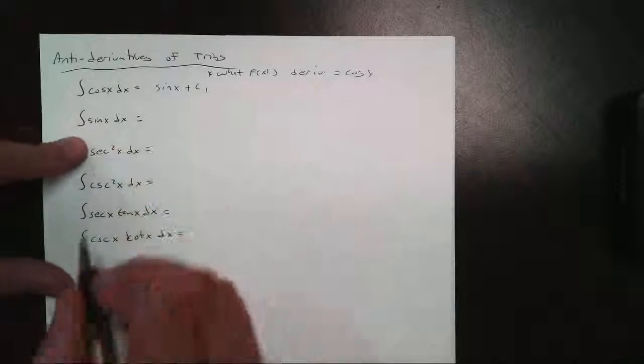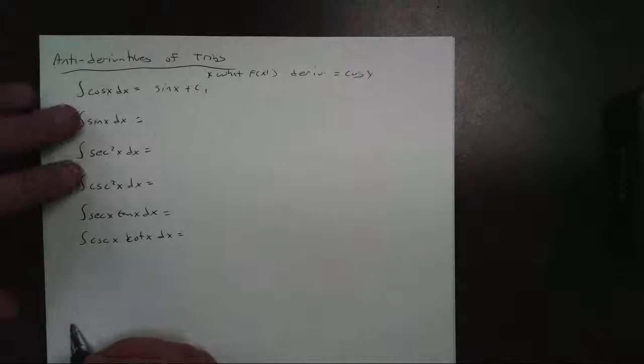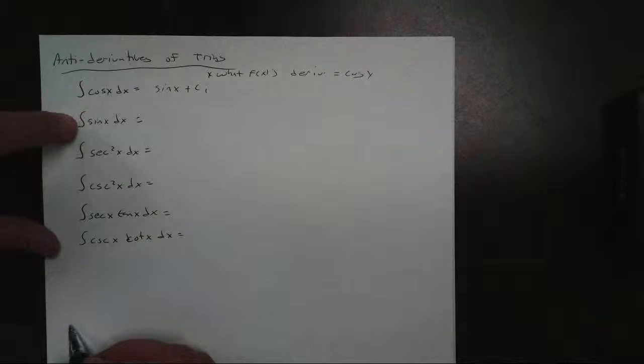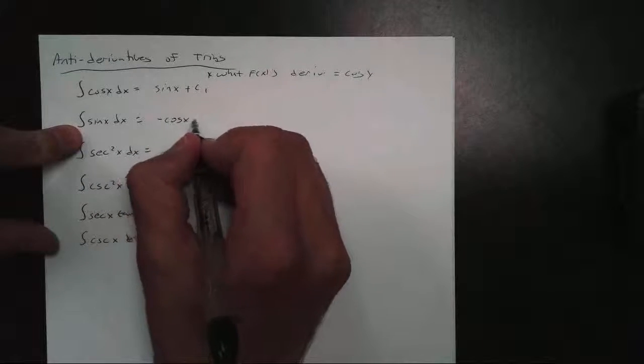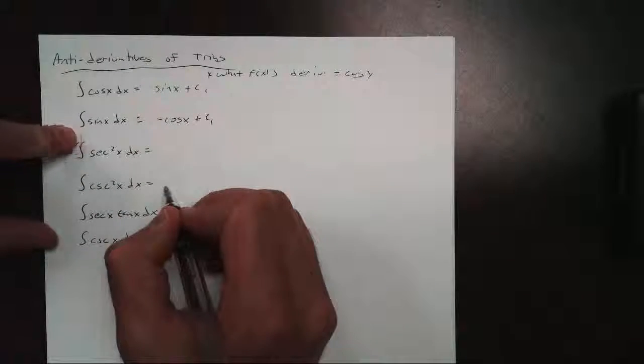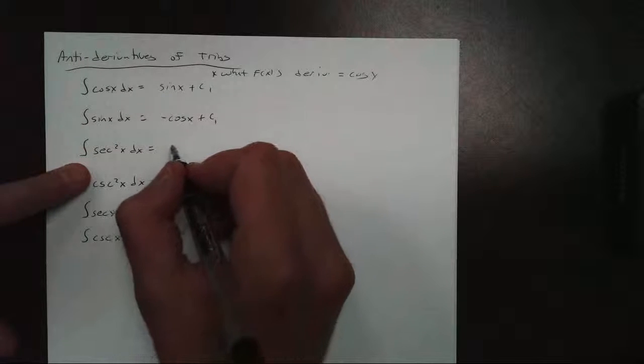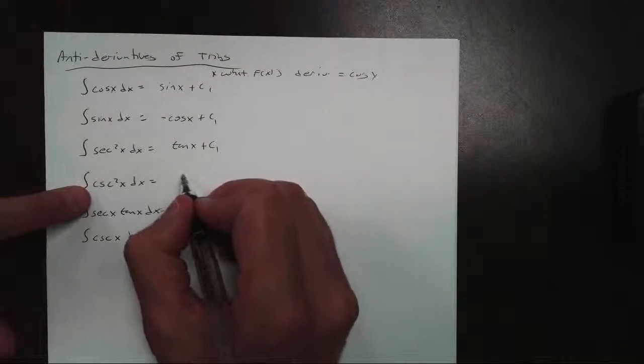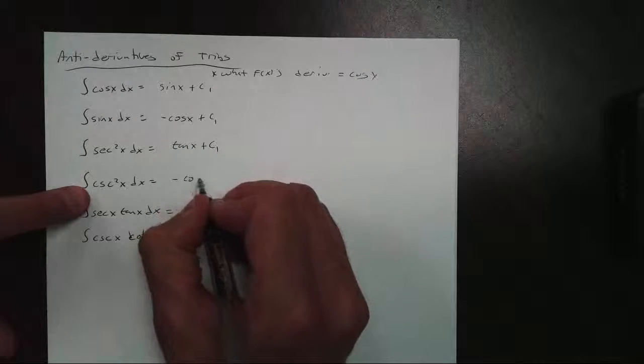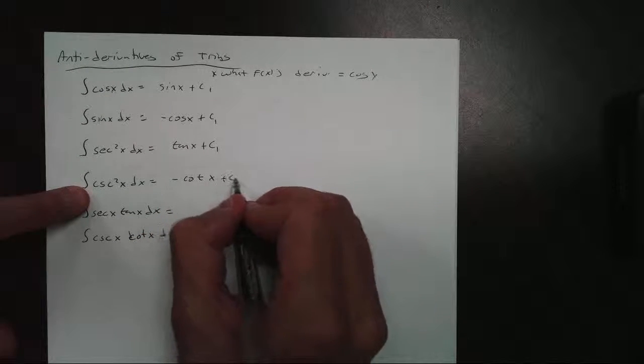So what function's derivative, then, is sine? Well, cosine's derivative is negative sine. So I go backwards, this becomes negative cosine of x plus c1. What function has a derivative of secant squared? Well, that's our tangent of x plus c1.